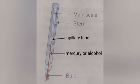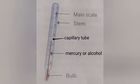The bulb is the part of the thermometer that actually touches the object whose temperature is to be measured. Inside the stem there is a tube of very narrow diameter known as the capillary tube, also known as the bore. The rising or falling of the mercury or alcohol takes place in this capillary tube.